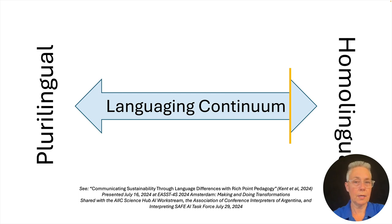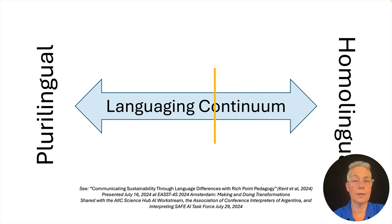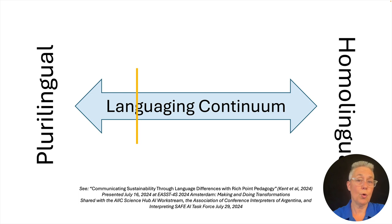Ideally, what we want is for folks to develop and retain the plasticity to communicate in different language conditions. The yellow bar oscillates back towards the plurilingual pole on the left.